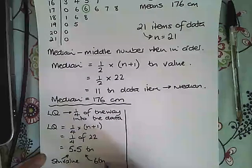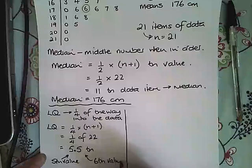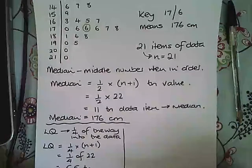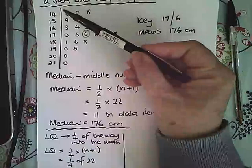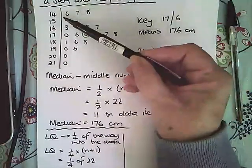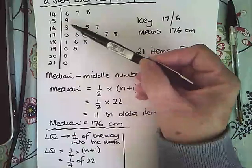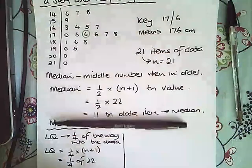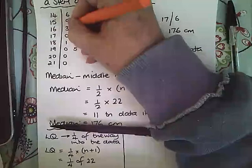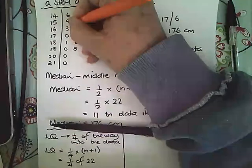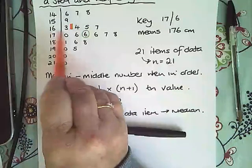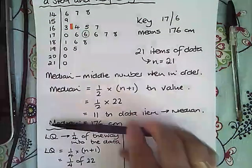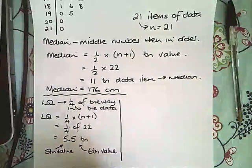So let's go back to our data. We're looking for between the fifth and the sixth value: 1, 2, 3, 4, 5 and 6. So these two numbers here are our fifth and our sixth value, so halfway in between 163 and 164 is 163.5. So that is our lower quartile value, 163.5 centimeters.